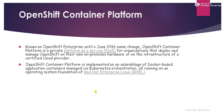Now we'll discuss the first model, which is OpenShift Container Platform. It was known as OpenShift Enterprise until June 2016, when the name changed. OpenShift Container Platform is a private platform-as-a-service for organizations that deploy and manage OpenShift on their own premises hardware or on the infrastructure of a certified cloud provider.